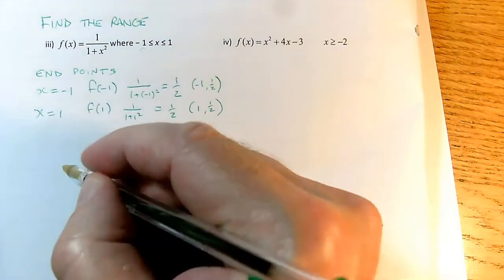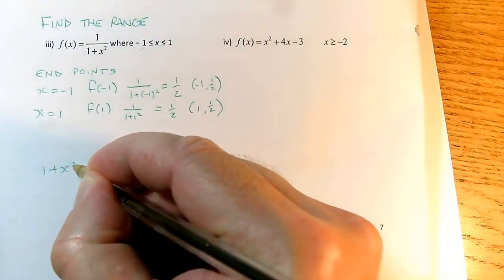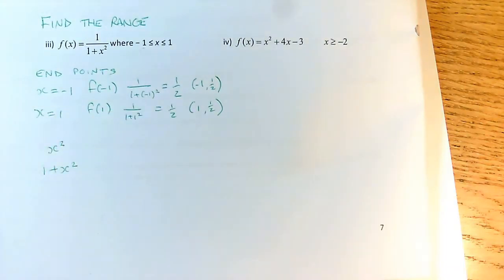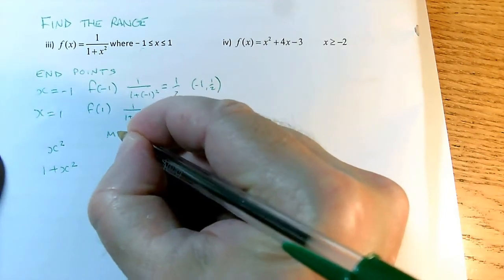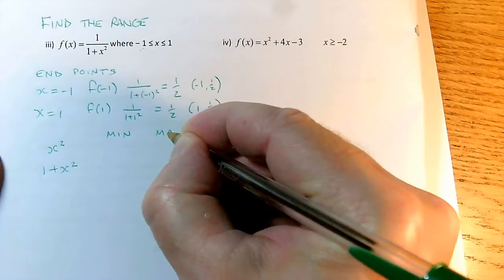So before I think about the fraction, I can think about 1 plus x squared. And in fact, taking a step back from that, I know even more about x squared. And what can be helpful here? We're interested in the range of values things can take, so interested in minimum and maximum values.